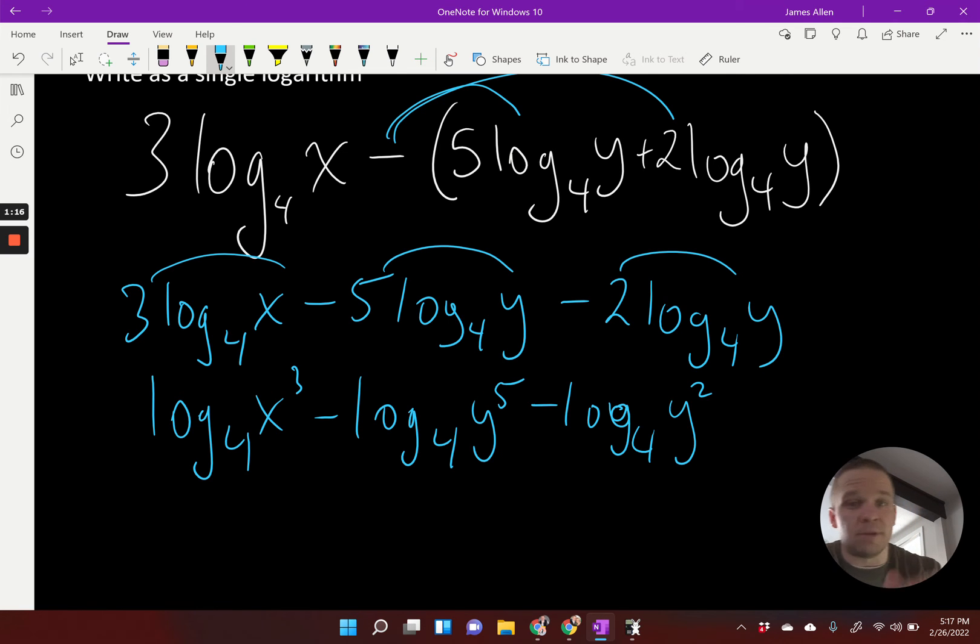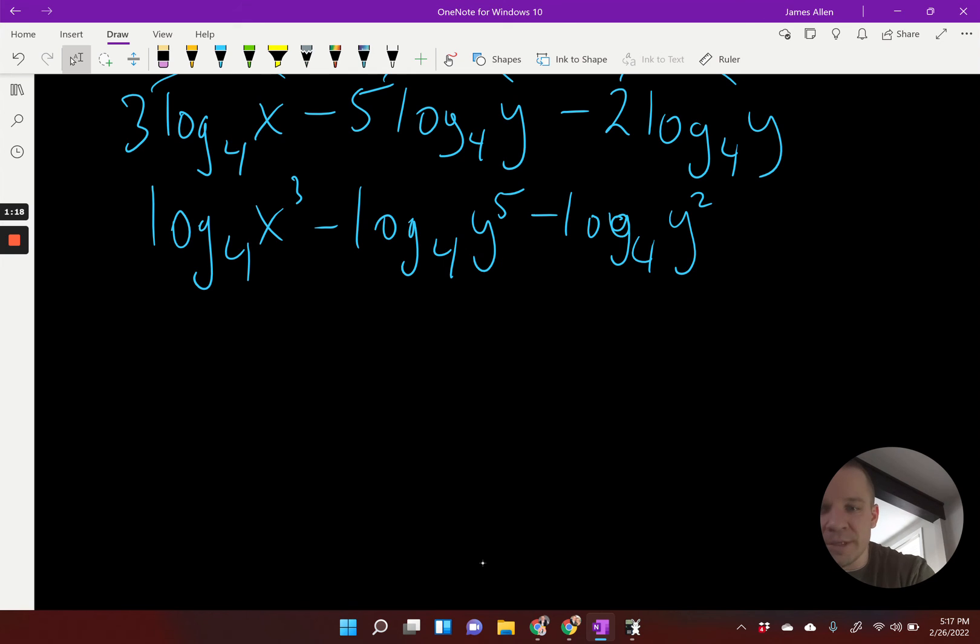Now I can condense this into a single logarithm. And by doing so, I'm going to have log base 4. We're going to set up a fraction because I know I'm going to have division here because I have that subtraction going on. Since the one with the x cubed is positive, the x cubed goes in my numerator.